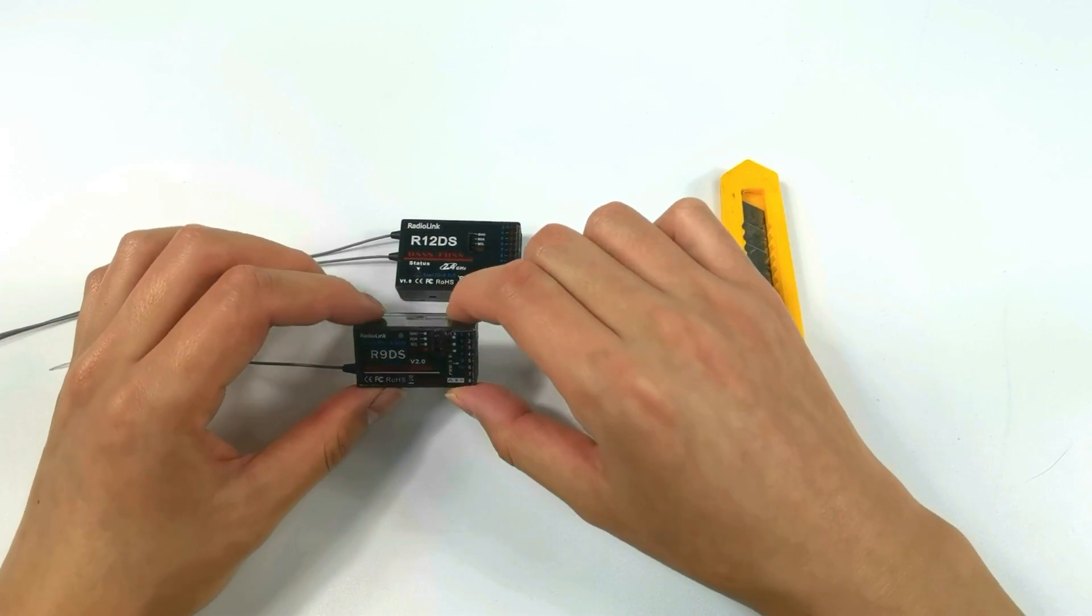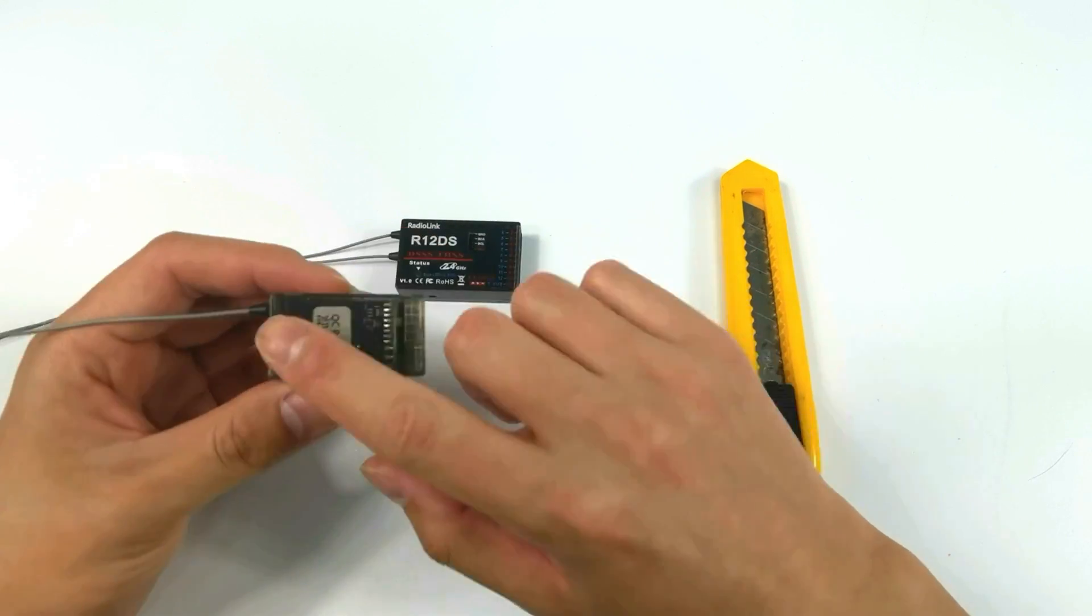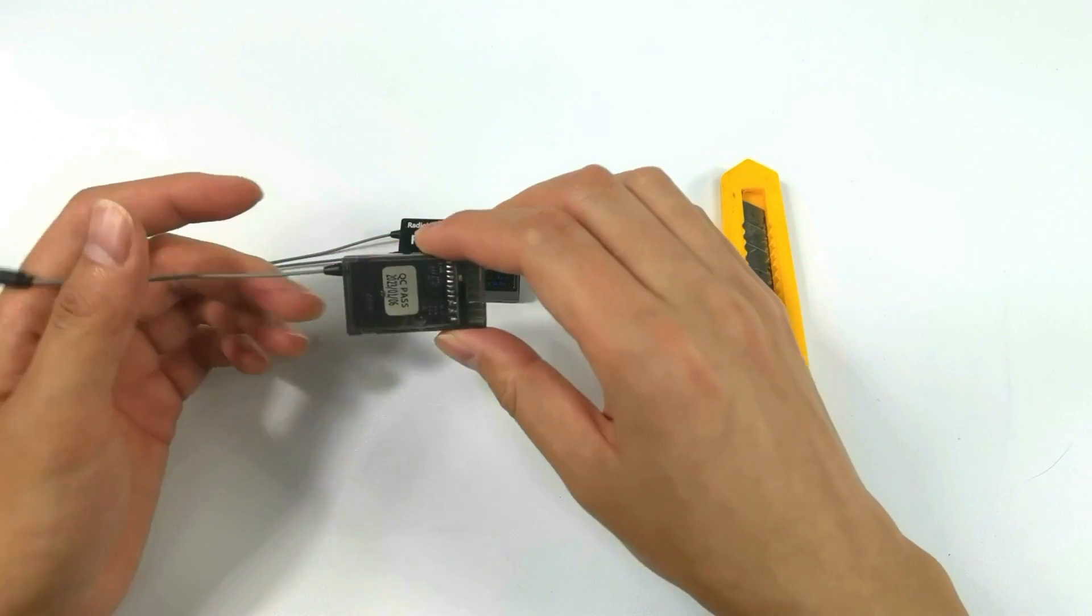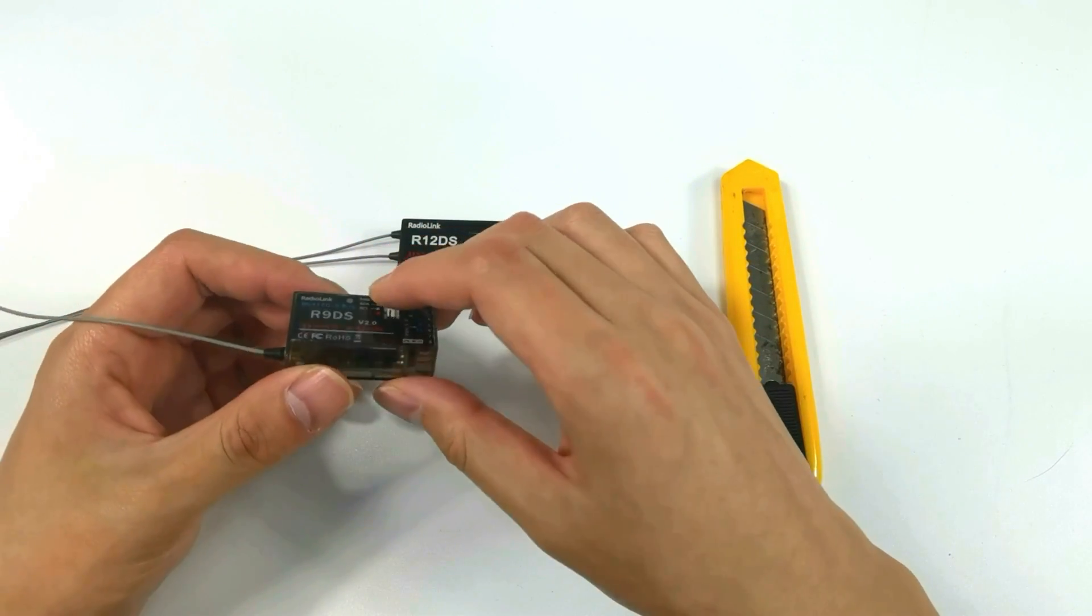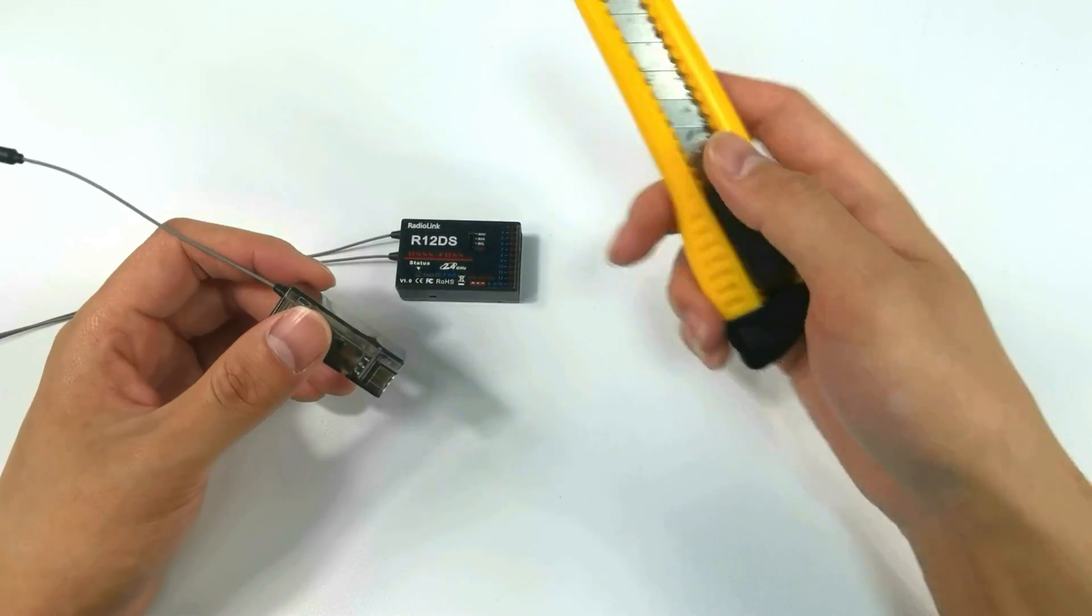It needs some skills to remove the shell of R9DS receiver. I will show you how to replace the antenna of R9DS receiver first.